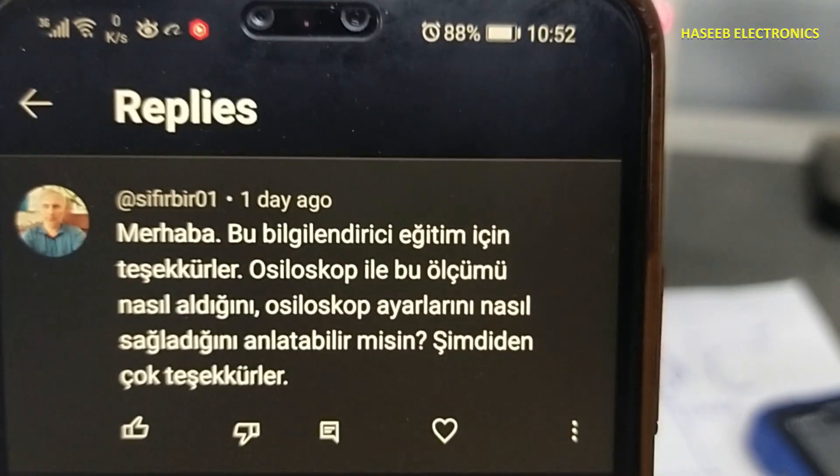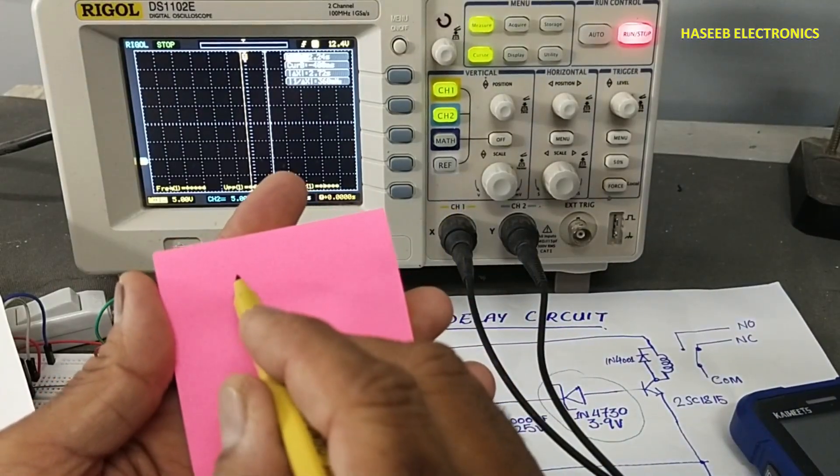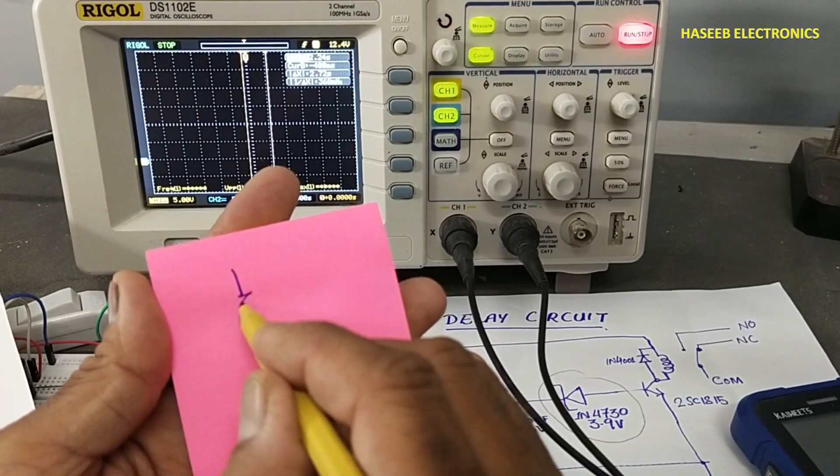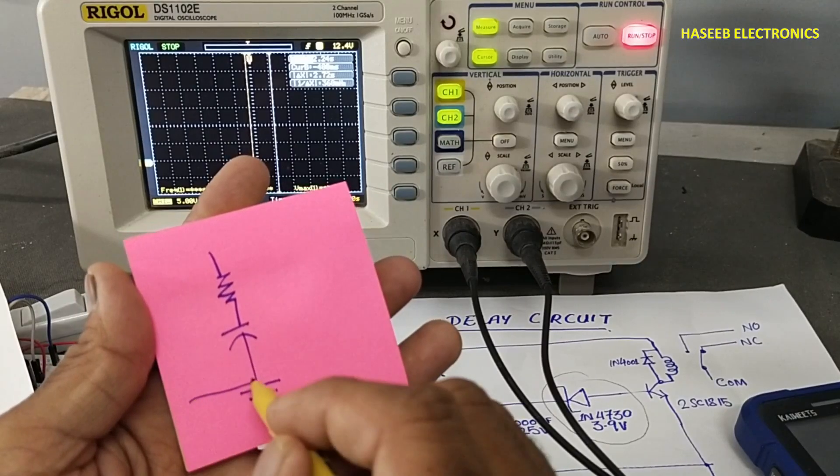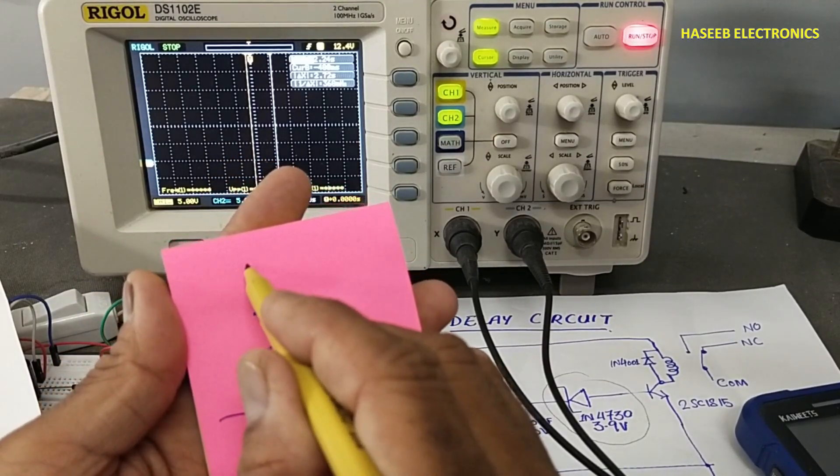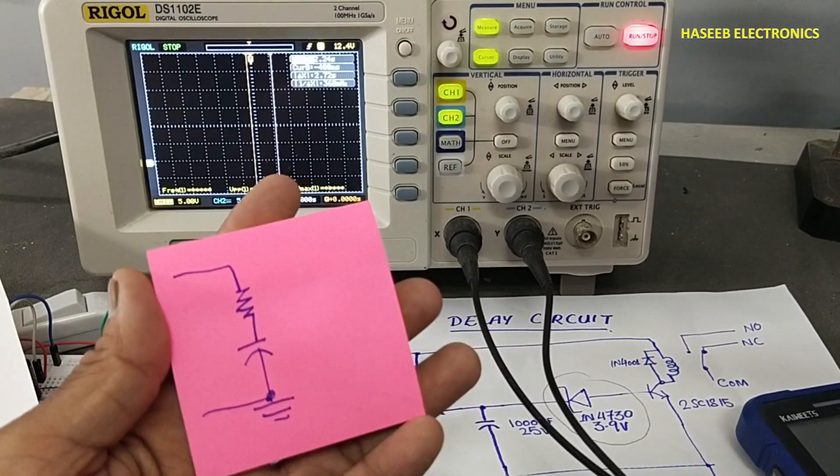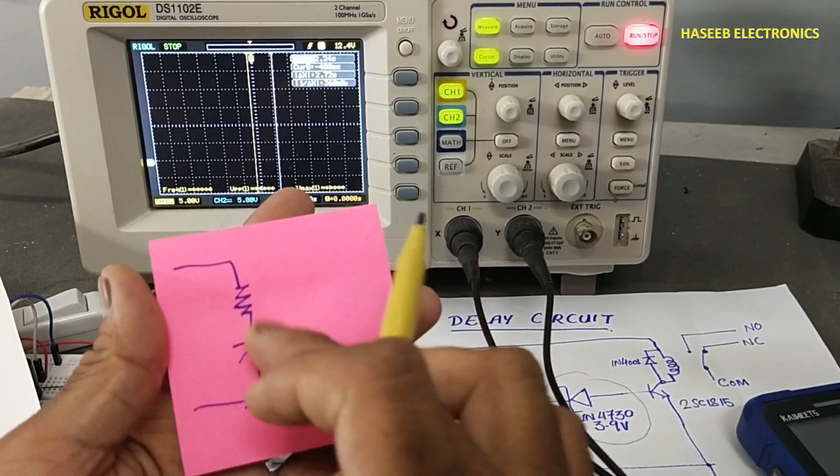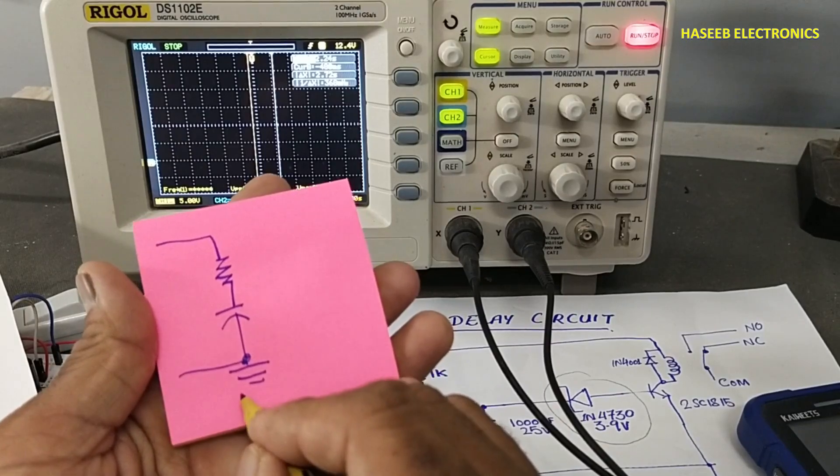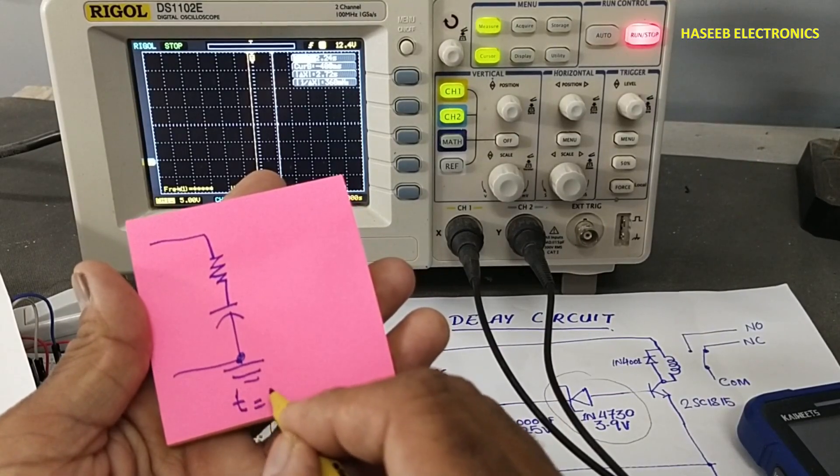When we use any RC circuit and apply any supply voltage here at this point, the time constant of this circuit, the RC time constant, is equal to T = R × C.